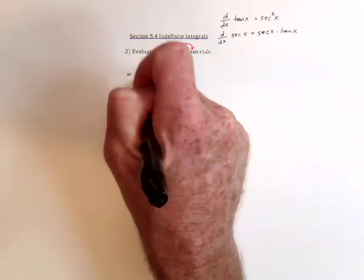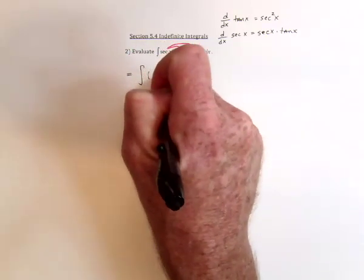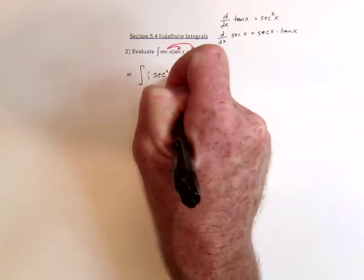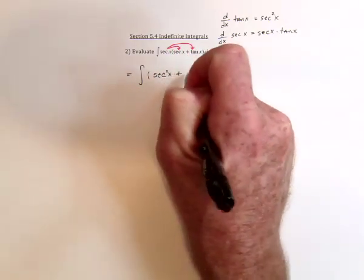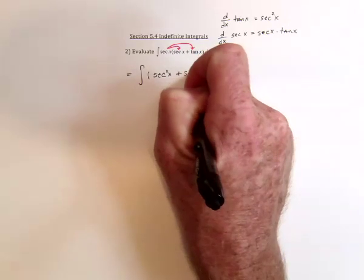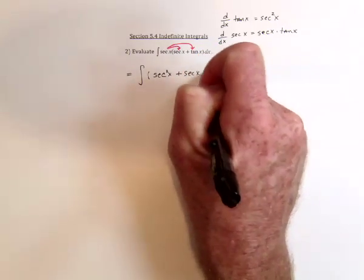So this one is going to be integrate, and then secant times secant is going to be secant squared. Plus distribute the secant up there, and it's going to be secant times tangent.